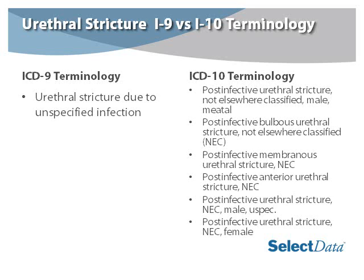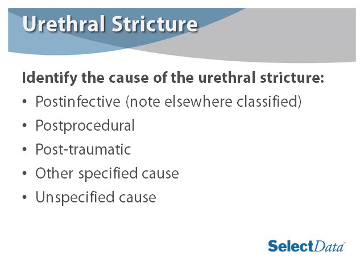Again, we see the differences between ICD-9 and ICD-10. In ICD-9 we had one code — urethral stricture due to unspecified infection — whereas in ICD-10 there is a multitude of codes available depending on the type of urethral stricture. We must identify the cause: Is it post-infective not elsewhere classified, post-procedural, post-traumatic, due to another specified cause, or due to an unspecified cause?